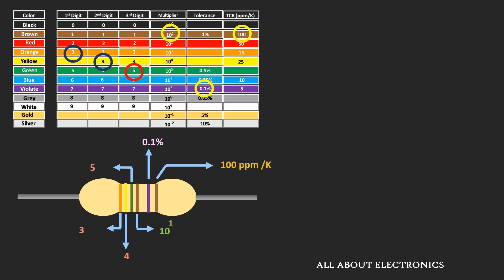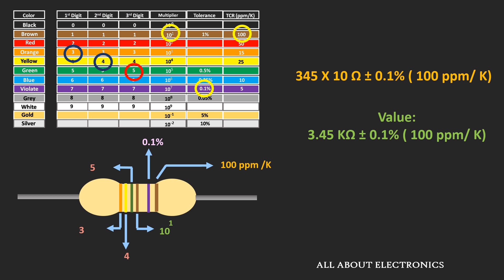Combining all the individual values, the resistor R equals 345 × 10¹ = 3.45 kΩ with a tolerance of 0.1%, and a temperature coefficient of resistance of 100 ppm per degree Kelvin. In this way, we can find the value of a resistor when it has 6 color bands.